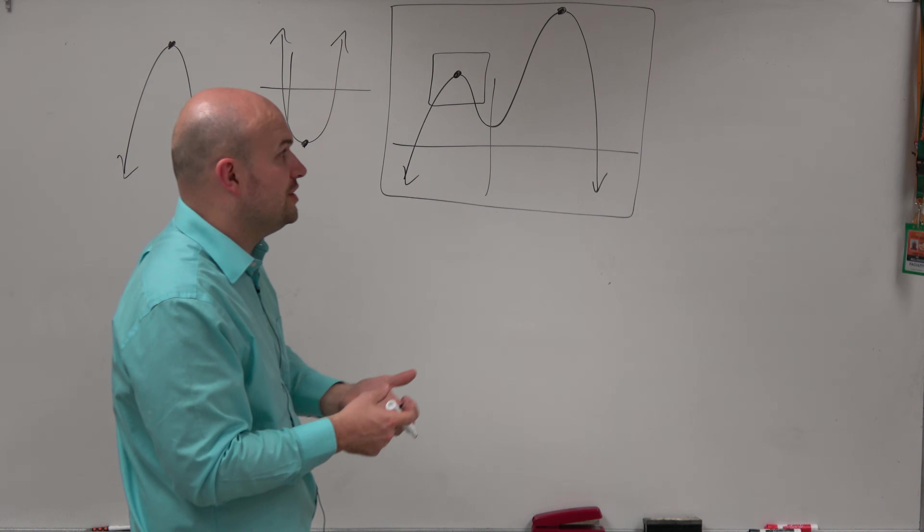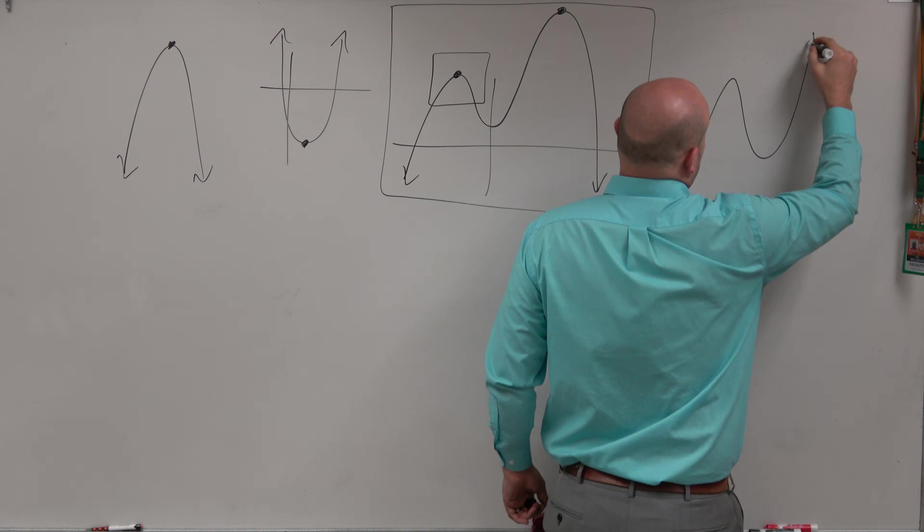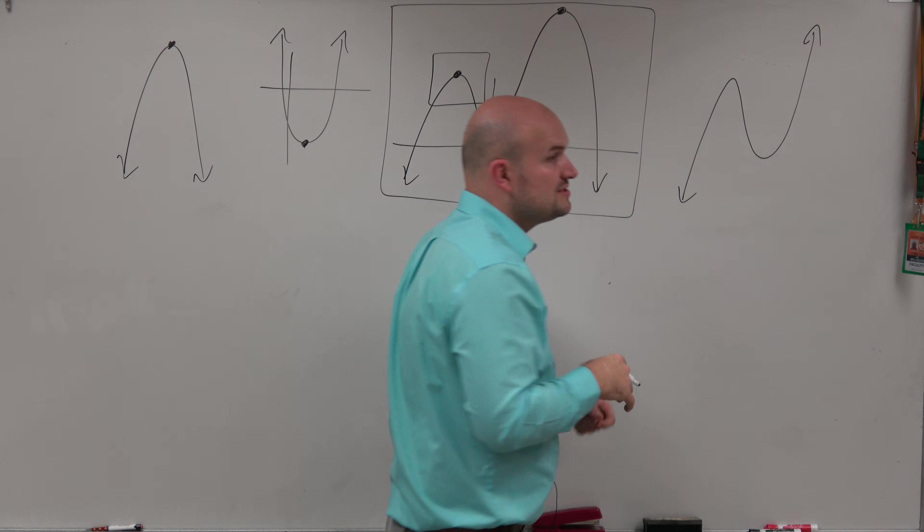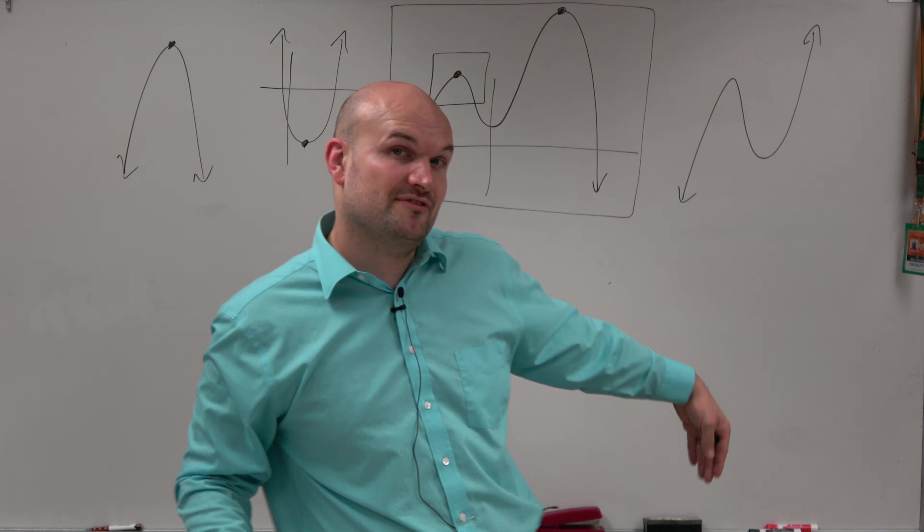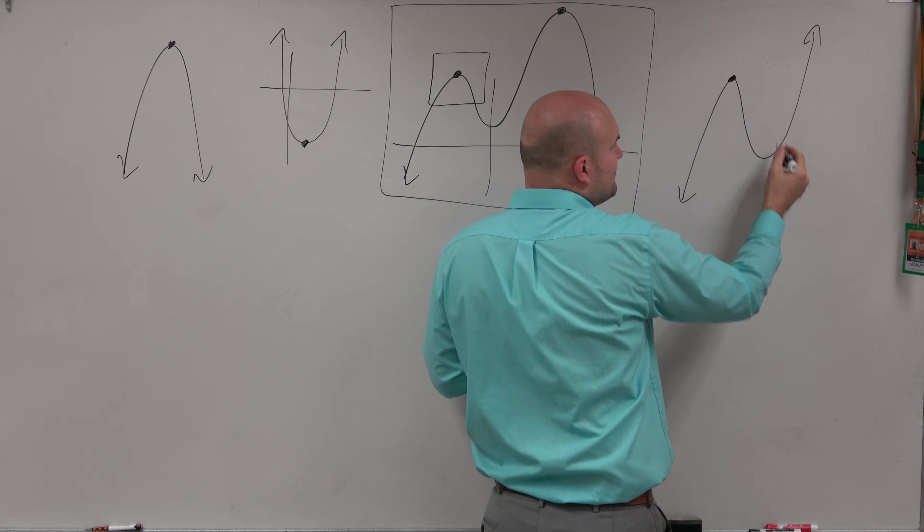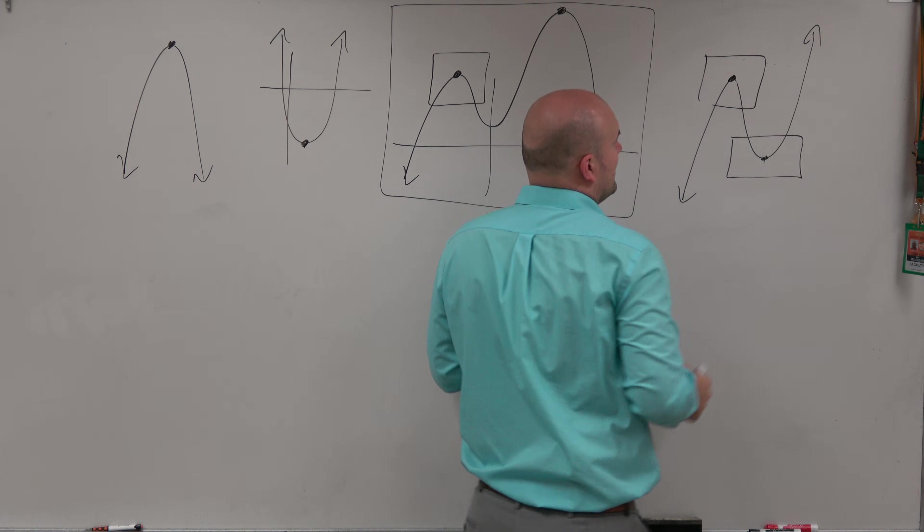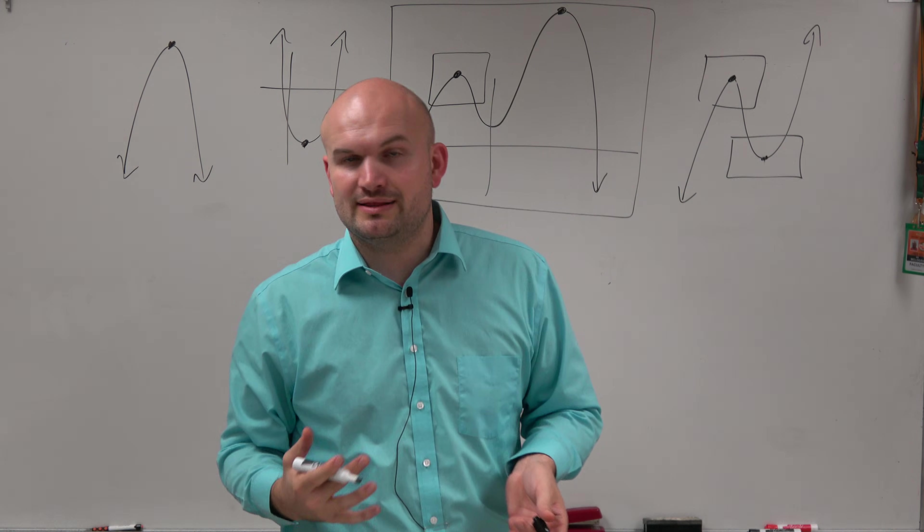You can have extrema like this—for instance, something like this where the graph continues indefinitely down and continues indefinitely up. So there is no absolute or global max or min. However, there is a relative max here and a relative min right there.